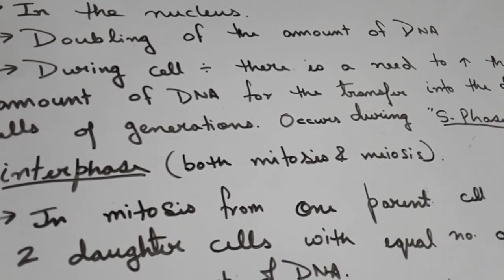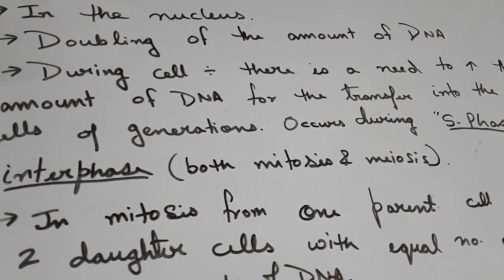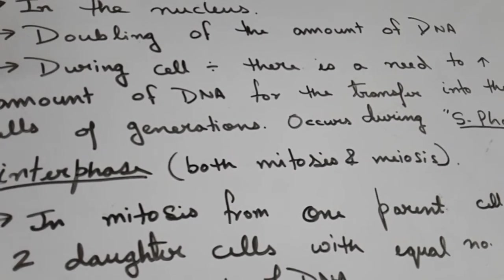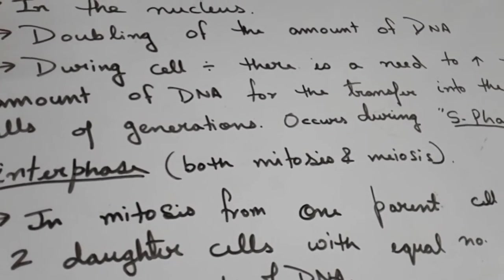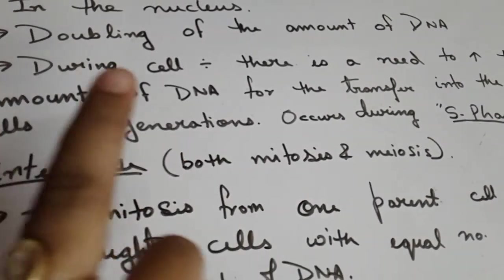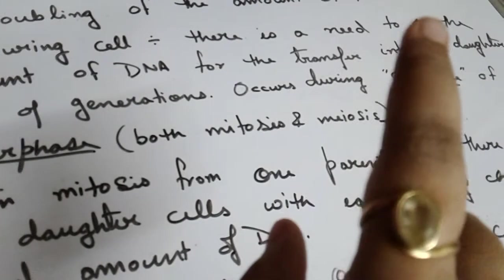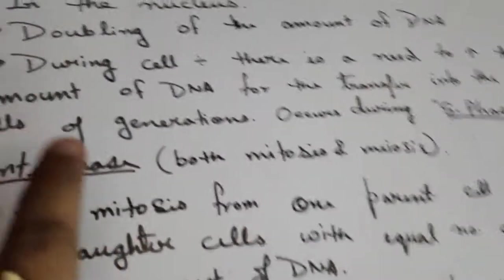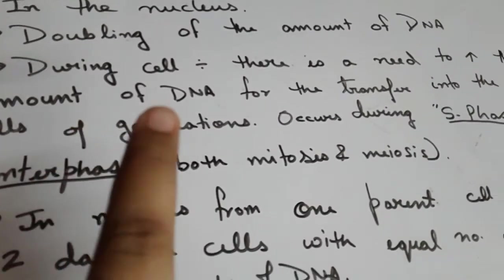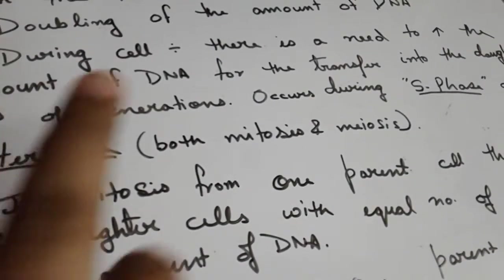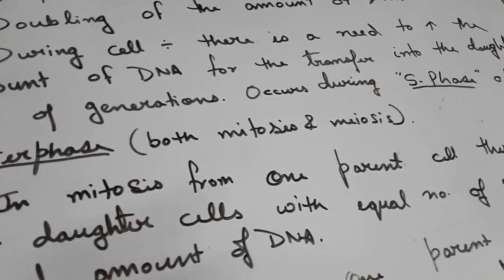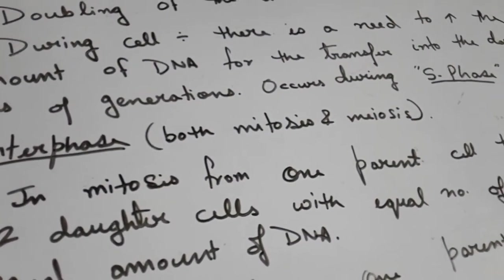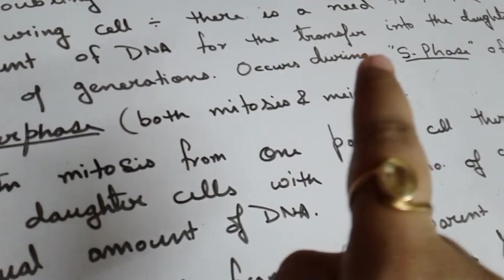DNA duplication is important to maintain the ploidy level and the amount of DNA in subsequent generations. During duplication of DNA, which occurs at the time of cell division, this process increases the amount of DNA, which is important to transfer equally into the daughter cells to maintain the ploidy level for future generations.